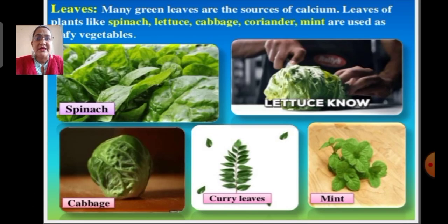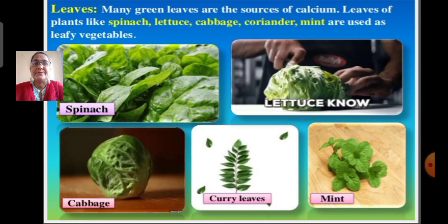Next are edible leaves. Many green leaves are sources of calcium. Leaves of plants like spinach, lettuce, cabbage, coriander and mint are used as leafy vegetables.